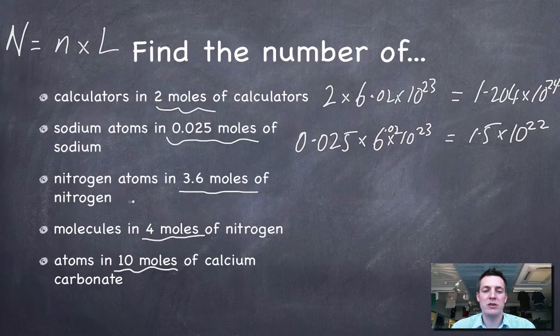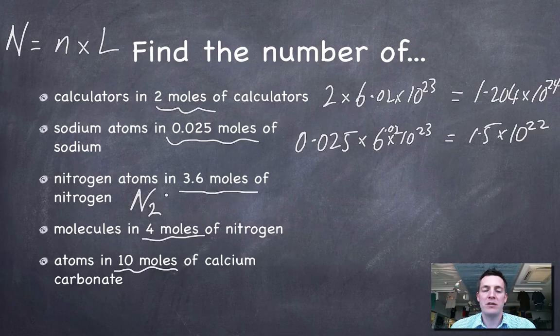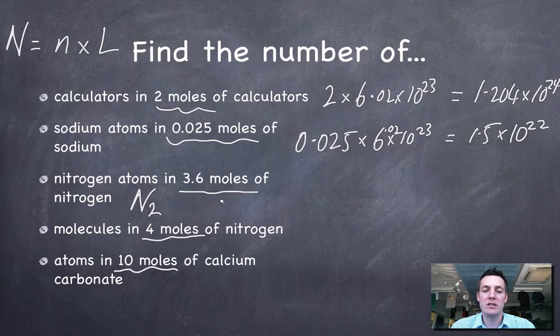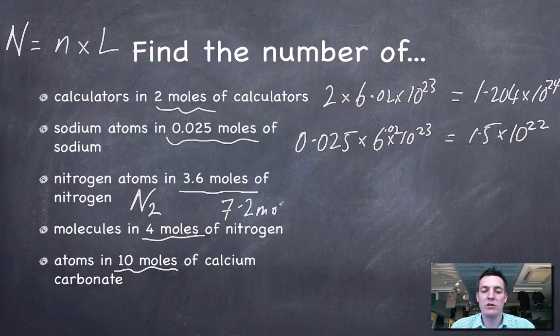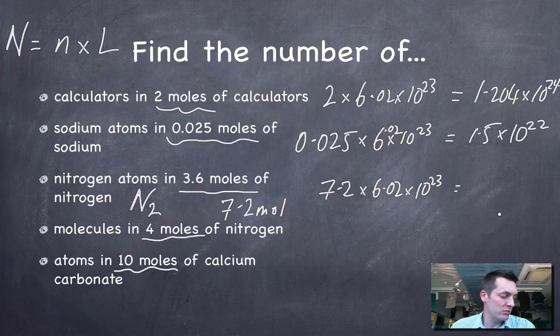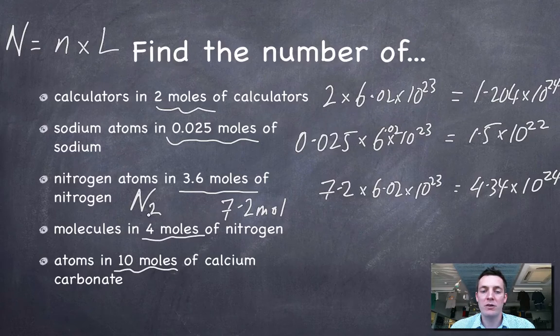Now if I had 3.6 moles of nitrogen, I need to remember the formula of nitrogen is N2. So the number of atoms I have in a nitrogen molecule is twice as large as the number of nitrogen molecules themselves. So if I had one molecule, I'd have two atoms. So in other words, this is going to be 7.2 moles of atoms. So I take my 7.2 and I multiply it by the number of particles in a mole of a substance. And what's that? Well, that equals 4.34 times 10 to the 24 atoms. Difficult to do that one if I don't remember what the formula of nitrogen is.